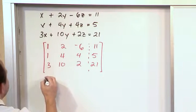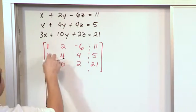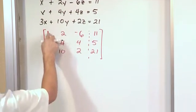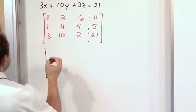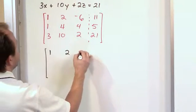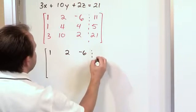So we have a 1 already here, so the next step in row reduction is we want to put a 0 underneath my leading column which is already in this case a 1. So I'm going to leave the first row alone: 1, 2, negative 6, 11.